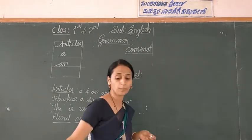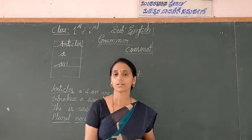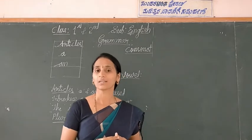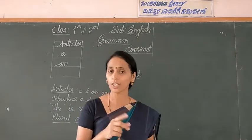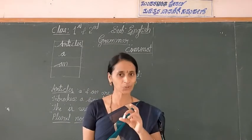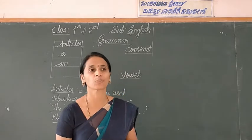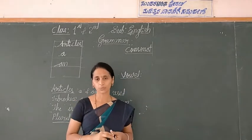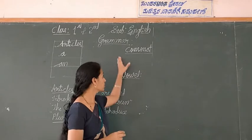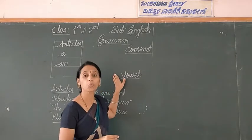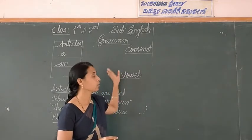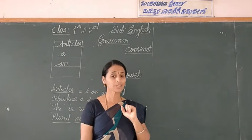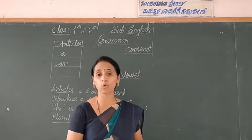How many alphabets are there, students? Already you know that - how many alphabets are there? Yes, there are 26 letters. Do you know the 26 letters? Yes, of course. We divide them into two groups: one is the consonants and the second one is the vowels.